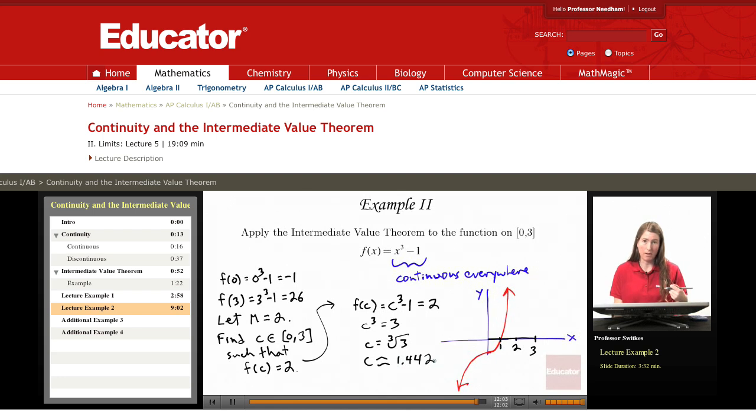Like the intermediate value theorem guaranteed us we could achieve. So typically a problem like this in your textbook might say something like apply the conclusion of the intermediate value theorem to find a c value such that f(c) equals 2, or we've chosen capital m to equal 2.